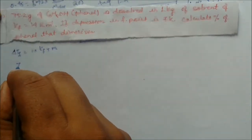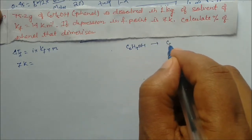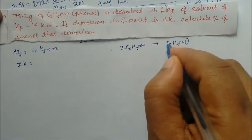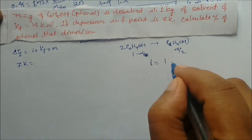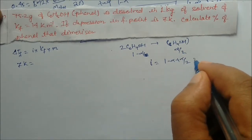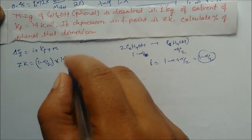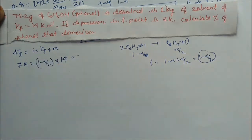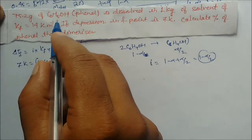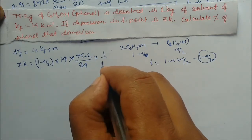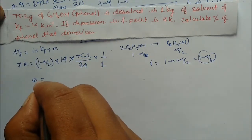Phenol dimerizes: 2 C₆H₅OH → (C₆H₅OH)₂. At equilibrium: (1 − α), α/2. Total = 1 − α/2, so i = 1 − α/2. Delta Tf = 7 K, Kf = 14, molality = 75.2 g / (94 g/mol) per 1 kg solvent. Substituting all values and solving gives alpha = 0.75.